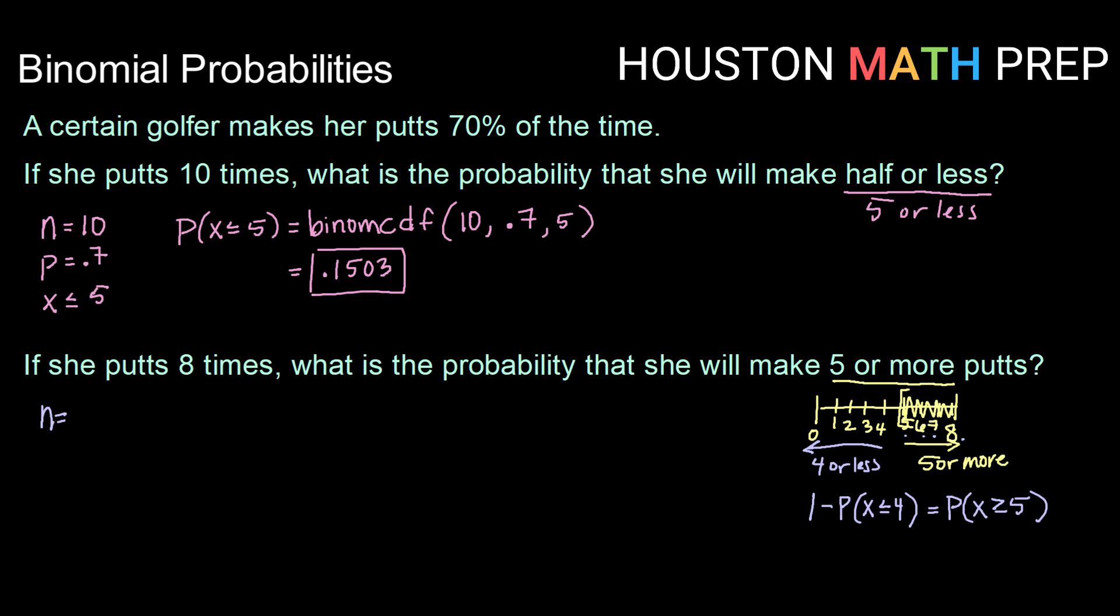So gathering up my information, my number of putts is 8, my probability of success is 0.7, and I am going to calculate the probability of being less than or equal to 4 first. So my probability of being less than or equal to 4 will be binomial CDF of 8 putts, 0.7 chance of making it, and 4.